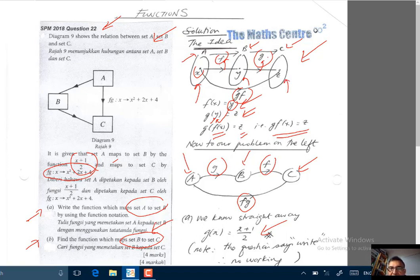So ini bermakna G(Y) adalah Z. Y ialah F(X). Kita boleh ganti F(X) dalam nilai Y di sini. So kita dapat G(F(X)) adalah Z.